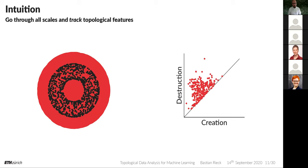Each dot is a topological feature — this is just the intuitive view, we will formalize it later. Each topological feature, each cycle for example, could be created at one creation threshold and destroyed at one destruction threshold. The point being that we can track topological features alongside this filtration.